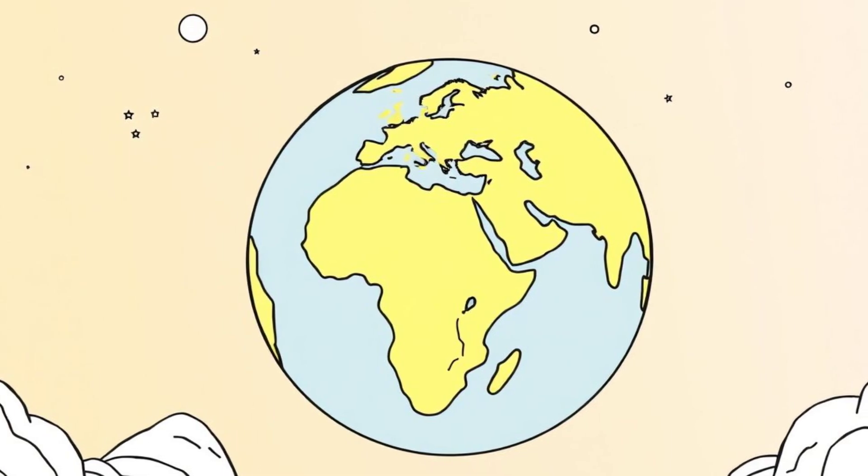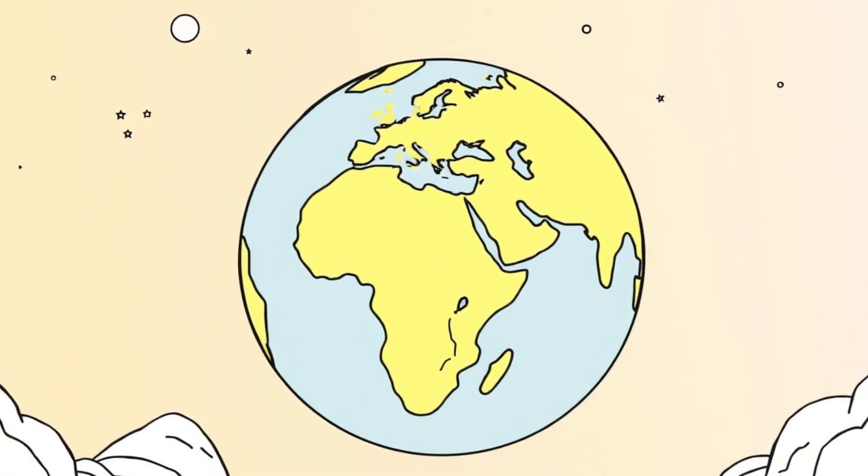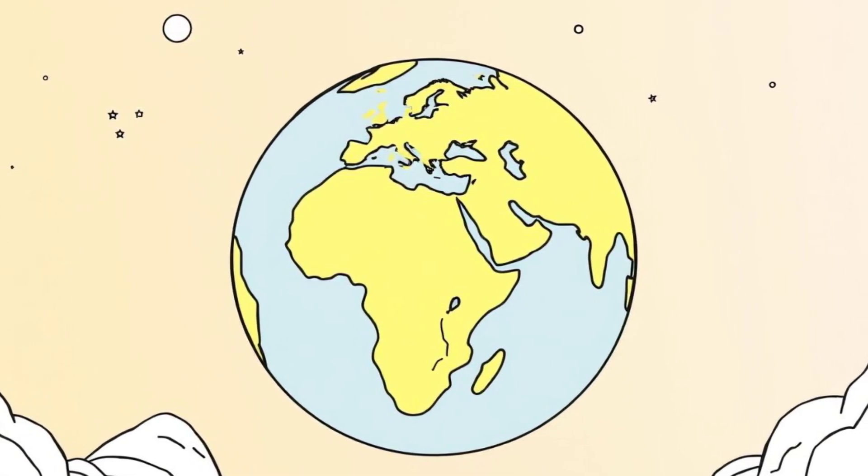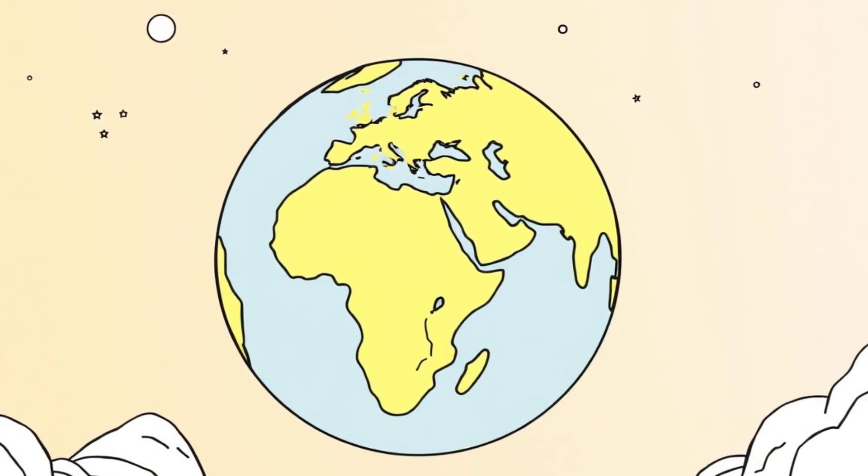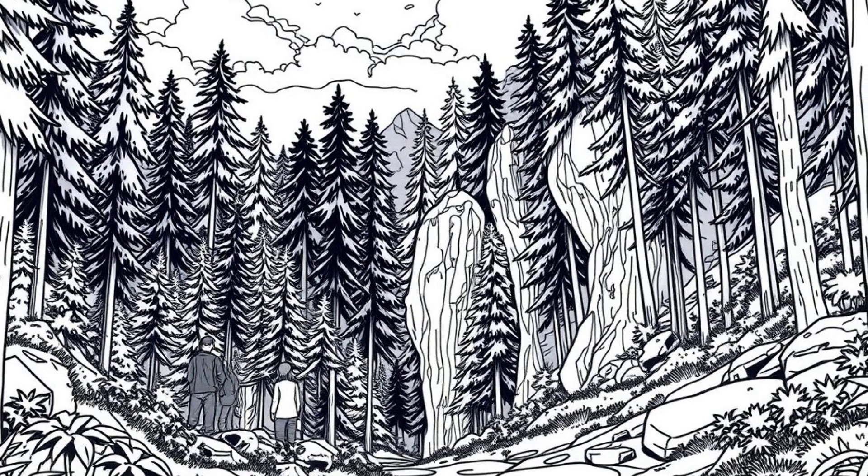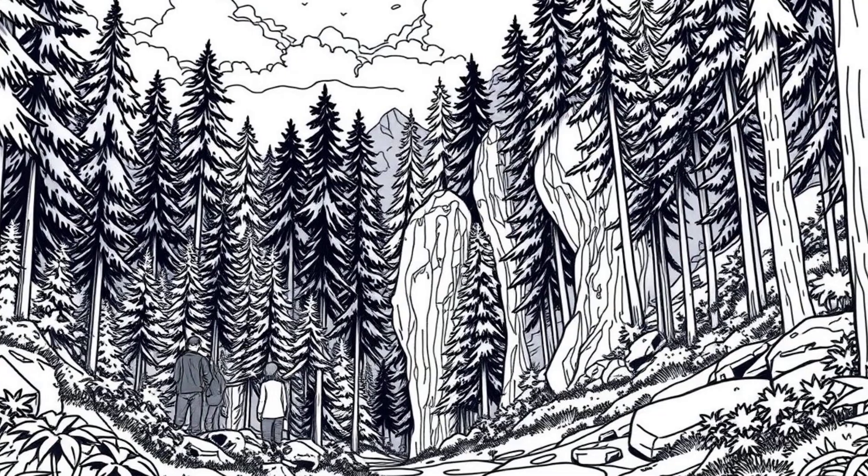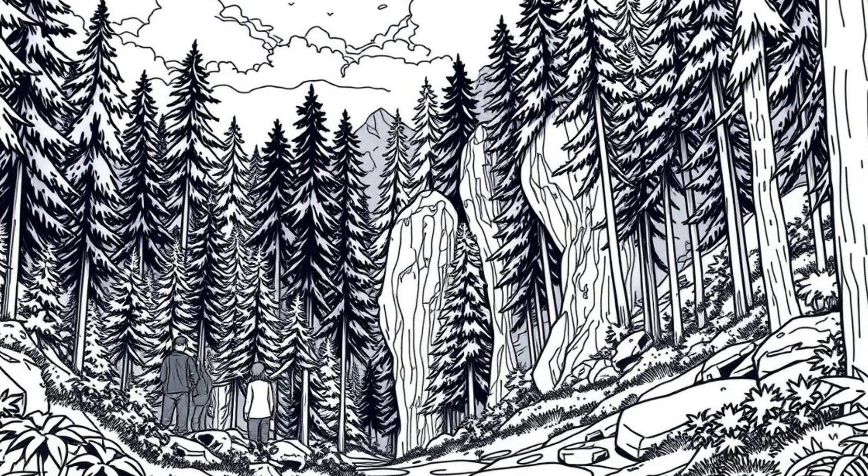So while it might not be noticeable to the human body, the Hudson Bay Gravity Anomaly is a striking example of how Earth's geological history continues to shape our planet today. It's a reminder that even the fundamental forces we take for granted, like gravity, aren't as uniform as they seem.